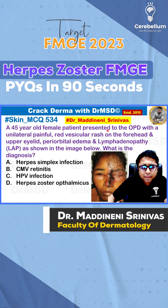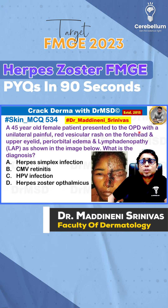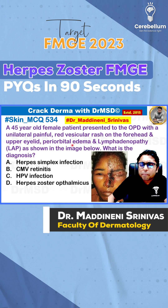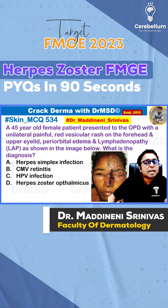A 45-year-old female presented to the OPD with a unilateral painful red vesicular rash on the forehead and upper eyelid. Periorbital edema is present. You are able to see it is not crossing the midline.